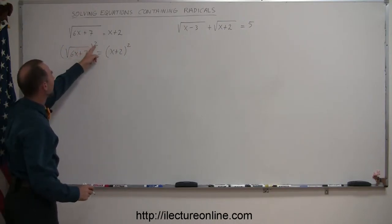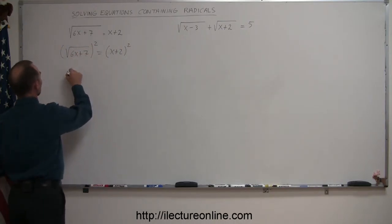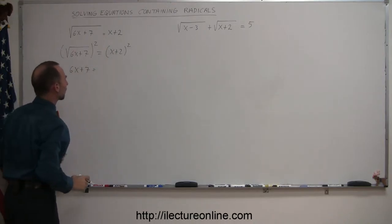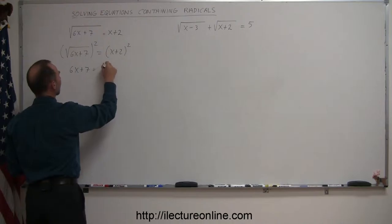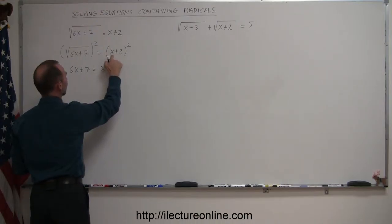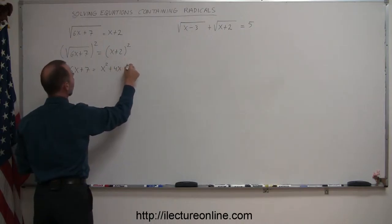When we do that, the radical will be negated by this square, so this becomes 6x plus 7 on the left side. And on the right side, we square the binomial, so we get x squared plus twice the product of the two, that's 2 times x is 2x times 2 is 4x. And then the last term squared, which is 4.